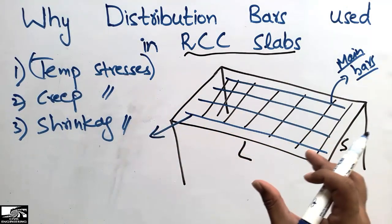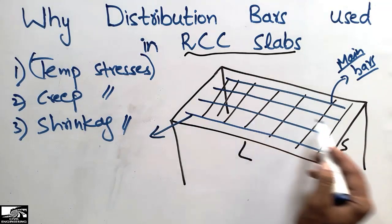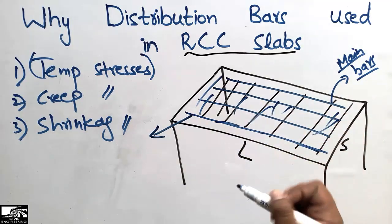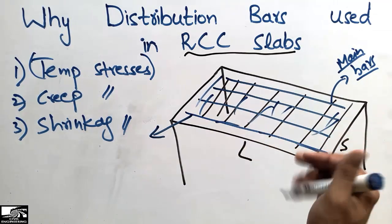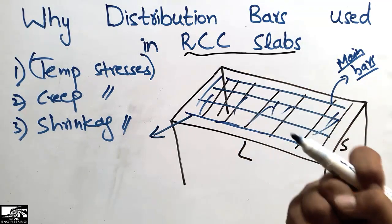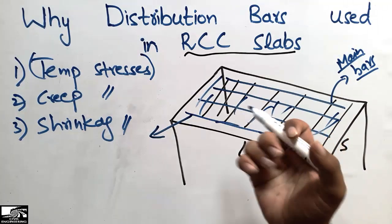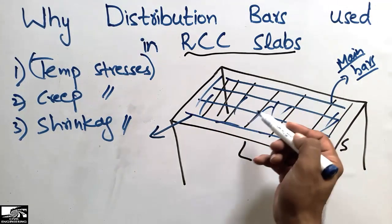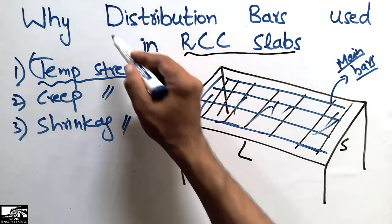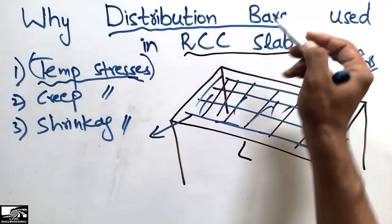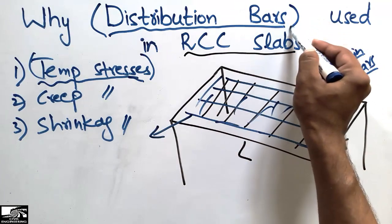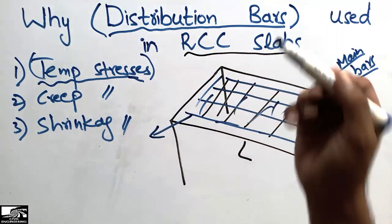Temperature stresses are those stresses which are created due to the change in temperature. Due to temperature change, the whole slab is compressed and tensioned — in cold conditions it shrinks. Stresses are created during this shrinkage of the concrete, so we place distribution bars for temperature stresses. This is why distribution bars are sometimes also called temperature reinforcement or shrinkage reinforcement.